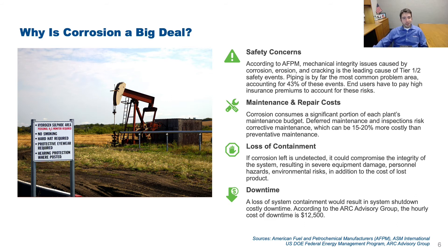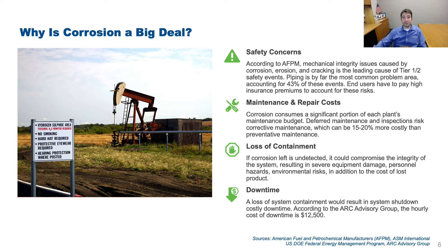So why is corrosion a big deal? Corrosion presents operators with a variety of risks. First, safety concerns — corrosion can compromise the integrity of pressure boundaries and is the number one cause of tier one and tier two safety incidents, according to the American Fuel and Petrochemical Manufacturers. A related risk is loss of containment, which can result in lost product, personnel safety hazards, equipment damage, and environmental effects. There are also significant maintenance and repair costs, and corrosion can cause unplanned outages as well as delays in starting up after planned outages — all of which are very costly to the industry.